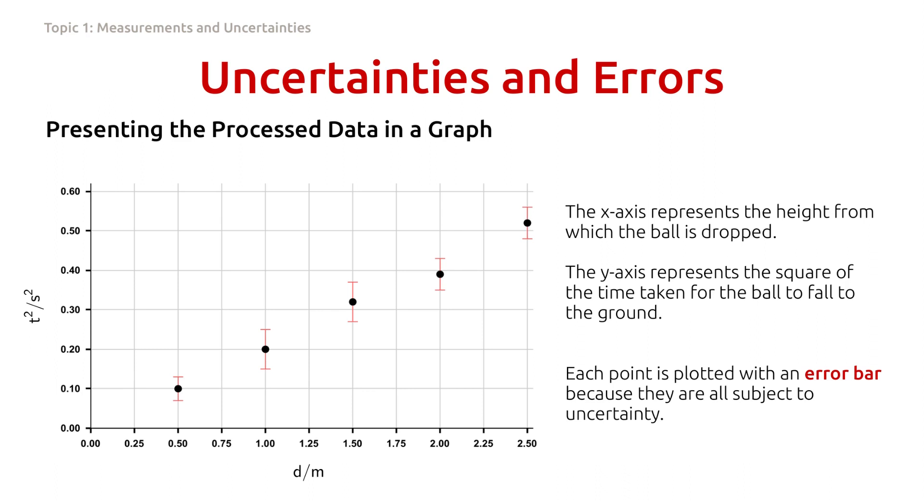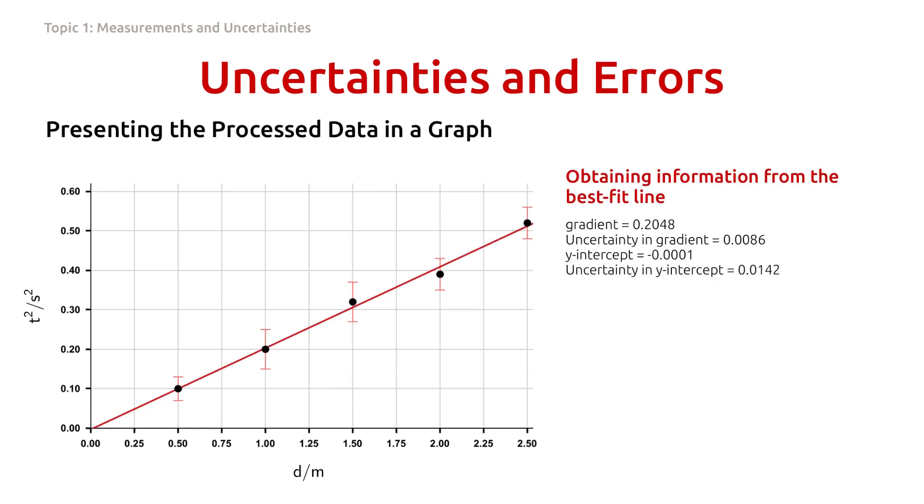To plot this data, we use Google Spreadsheet, in which it is assumed that there are no uncertainties in the x values. That's why we only draw the error bar in the y values, or the uncertainty in t squared as we have calculated before. From this set of points, we can draw a best fit line that goes through all the error bars, in such a way that minimizes the distance between each point and the line. Google Spreadsheet, which uses the least squares method, can do this for us.